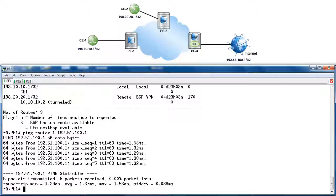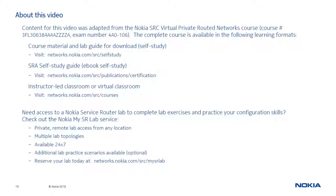Finally, let's run the same ping from the start of the lab to test Internet connectivity again: ping router 1, 192.51.100.1. This time, because of route leaking between the VRF and GRT on PE3, we get a successful response. That does it for this video on Internet access using route leaking between VRF and GRT. Thanks for watching and see you next time. Content for this video was adapted from the Nokia SRC Virtual Private Routed Networks course, available in multiple learning formats with remote private access to a service router lab.